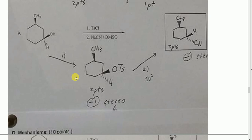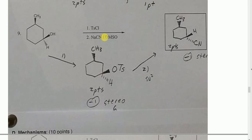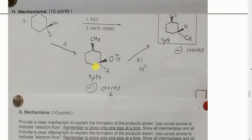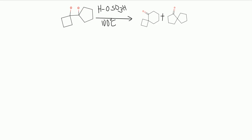TsCl converts the alcohol to a tosylate (OTs), which does not invert stereochemistry. Important note: TsCl does not invert, but PBr3 does invert stereochemistry. Then NaCN in DMSO — now with an excellent leaving group and a strong nucleophile in a polar aprotic solvent — SN2 occurs, substituting CN for OTs with inversion of stereochemistry, so the CN ends up on the dash.